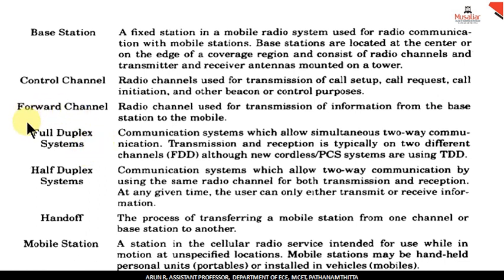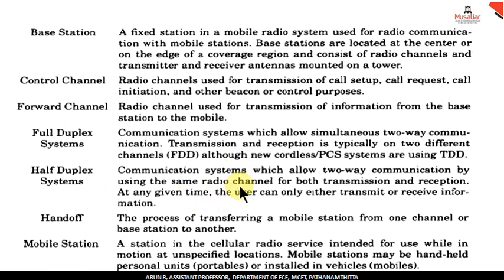Next is full duplex system. Communication systems can be classified as simplex, half duplex, and full duplex. Full duplex means a communication system that allows simultaneous two-way communication. Whereas half duplex allows two-way communication using the same radio channel, but at a given time only one user can either transmit or receive information. That is known as half duplex system.